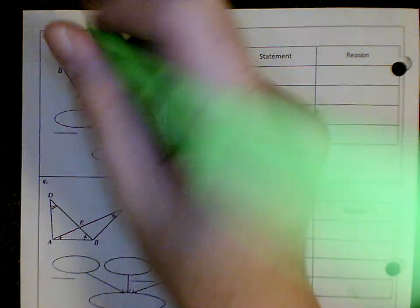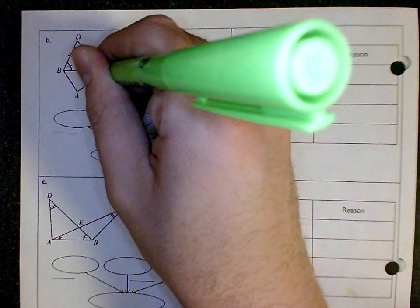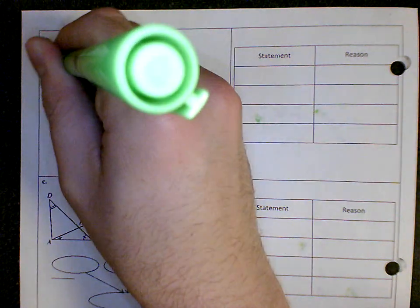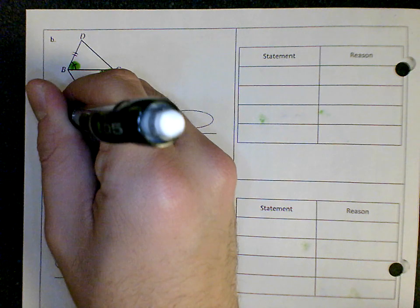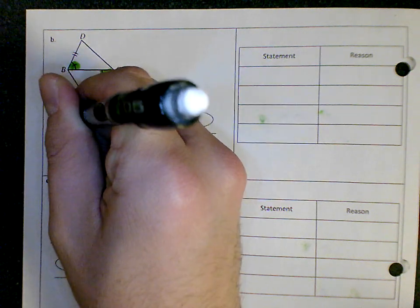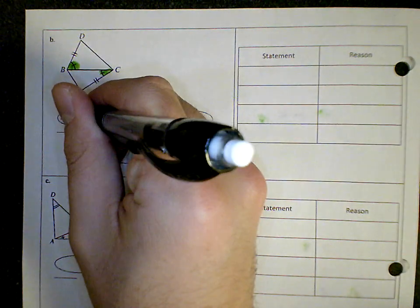So one of the first things is I know these two angles are congruent. So angle DBC is congruent to angle ACB.